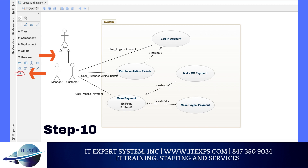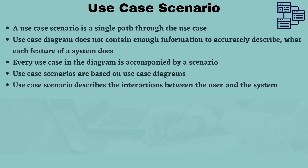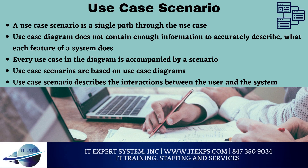That completes our use case diagram. This shows you how simple it is to create a UML use case diagram using any given scenario. Now that we covered use case diagram, we'll talk about use case scenarios. We know that a use case represents the actions required to enable or abandon a goal. It contains multiple paths that can be taken by any user at any one time. A use case scenario is a single path through the use case.